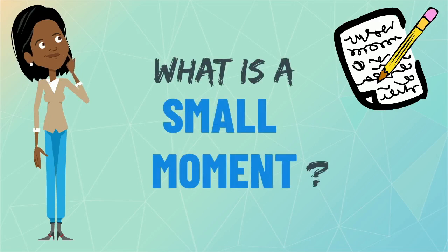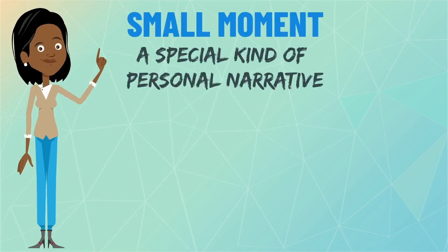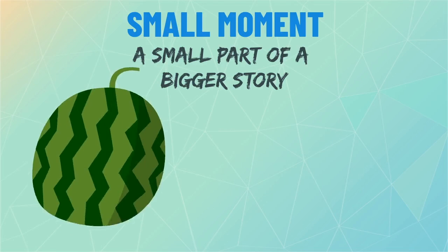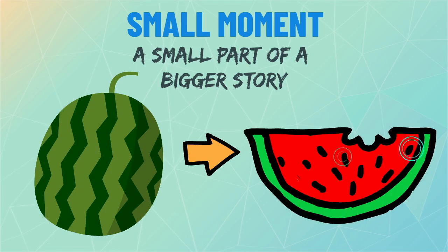What is a small moment? A small moment is a special kind of personal narrative. It is a small part of a bigger story. A good way to remember it is by thinking of a watermelon. A watermelon is a really big fruit, so you can think of it as the big moment. Each watermelon has lots of tiny seeds. The seeds are the small moments.